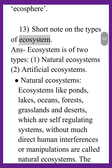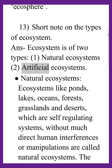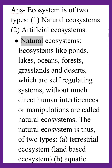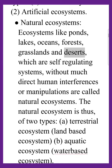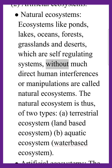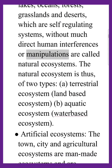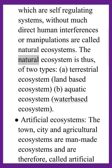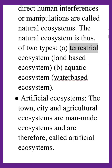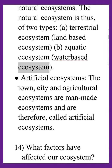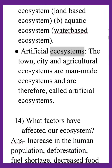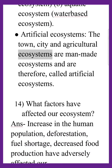Short note on the types of ecosystem. Ecosystems are of two types: 1. Natural ecosystems and 2. Artificial ecosystems. Natural ecosystems — ecosystems like ponds, lakes, oceans, forests, grasslands, and deserts, which are self-regulating systems without much direct human interference or manipulation, are called natural ecosystems. The natural ecosystem is of two types: a. Terrestrial ecosystem (land-based) and b. Aquatic ecosystem (water-based). Artificial ecosystems — towns, cities, and agricultural ecosystems are man-made and are therefore called artificial ecosystems.